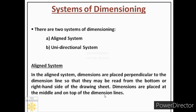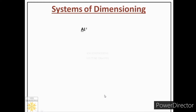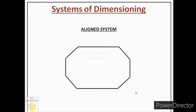Let us understand this definition through an example. Suppose this is the front view of any object and we want to place dimensions using the rules of the aligned system. One important point: whenever we place dimensions, there will be three kinds of lines in the drawing — horizontal lines, inclined lines, and vertical lines. Let us first see how to place dimensions for horizontal lines under the aligned system.